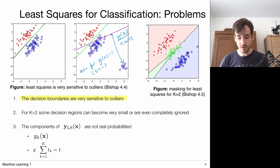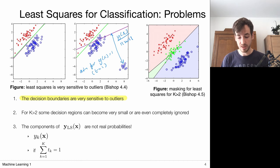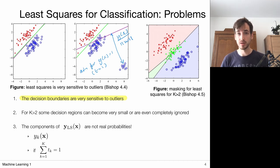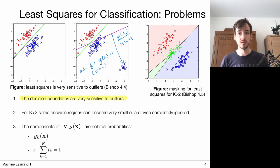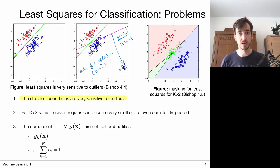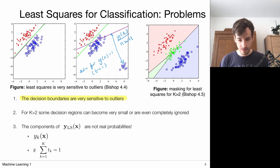There are solutions to this — in one of the next videos we'll talk about logistic regression, which has a penalty that says the further you are from the boundary, that's fine, but focuses primarily on the points close to the decision boundaries. Several classifiers coming up will focus on this aspect.